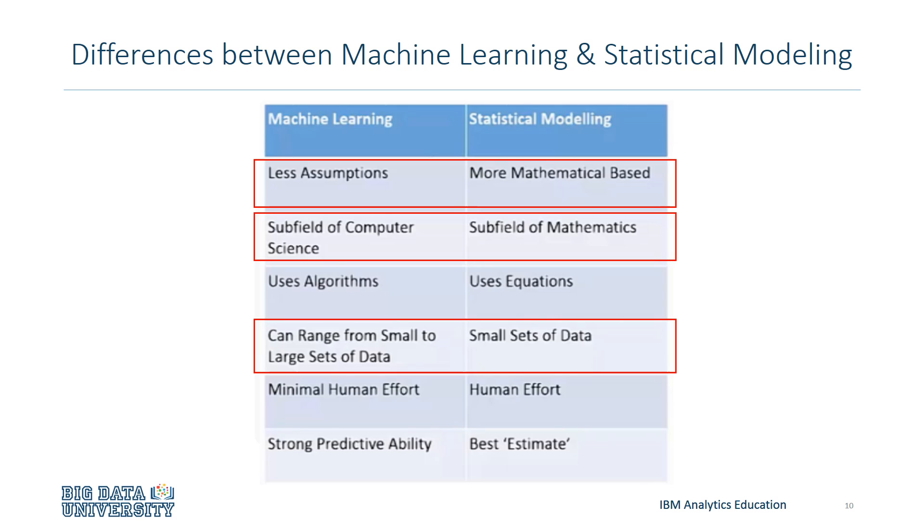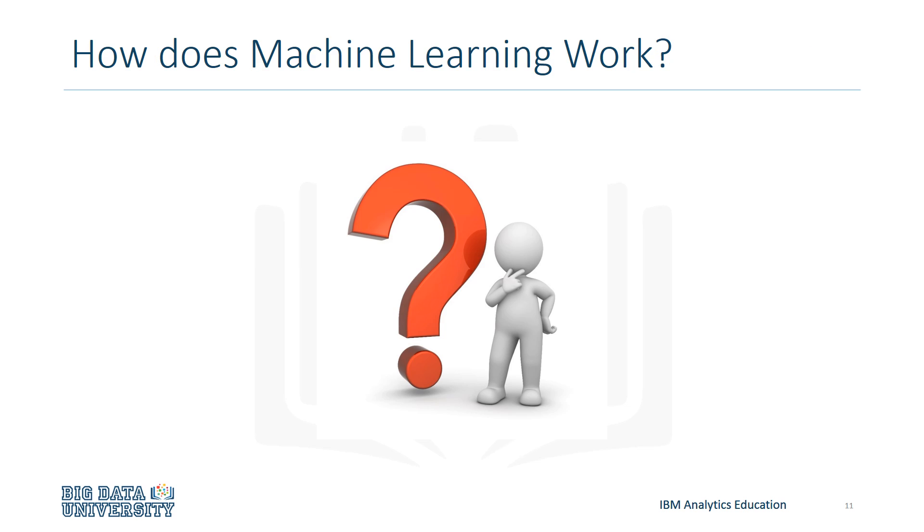Machine learning provides strong predictive ability with minimal human effort, while statistical modeling provides the best estimate with more human effort. So, how does machine learning actually work?